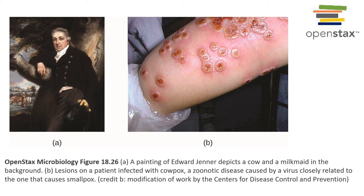This caused the child to develop cowpox, or a mild infection from the cowpox virus. Later, Jenner came back and deliberately exposed this child to smallpox to test whether he would develop it. Fortunately, the exposure to cowpox protected the child from smallpox — the child did not develop smallpox — and this led to the development of the smallpox vaccine, which was widely used throughout the world and led to the eradication of the smallpox virus.